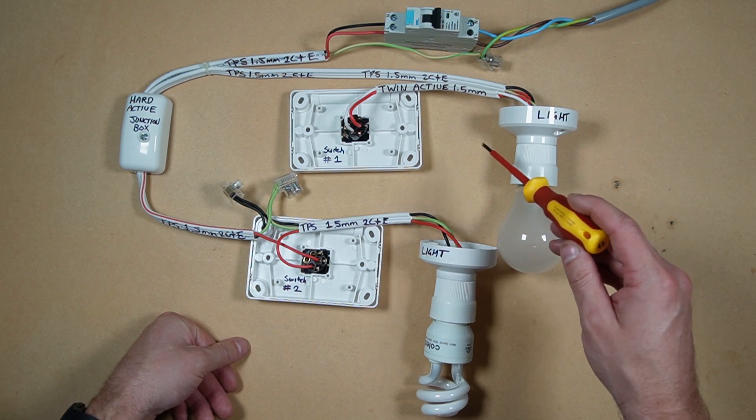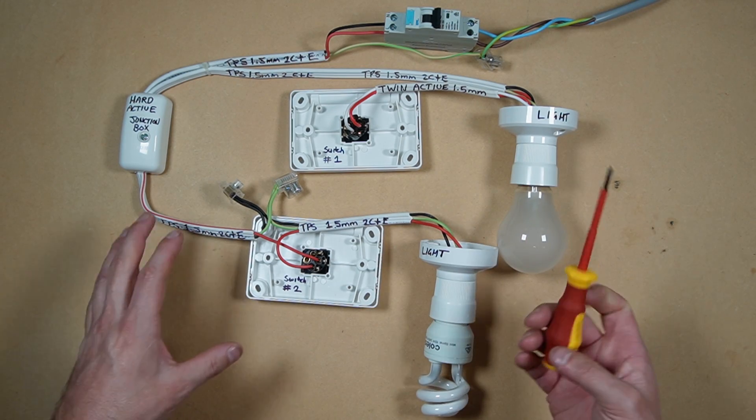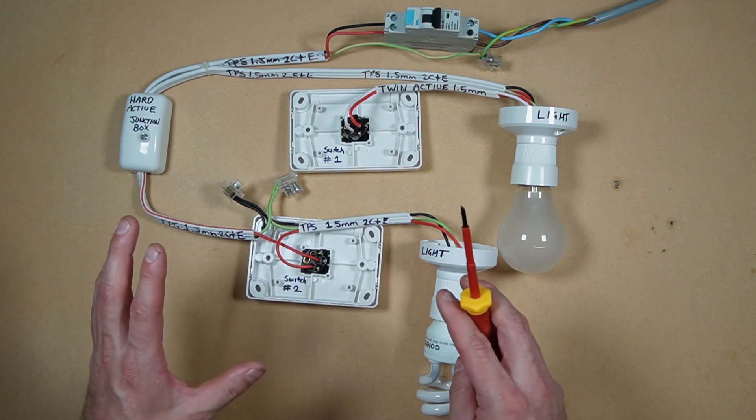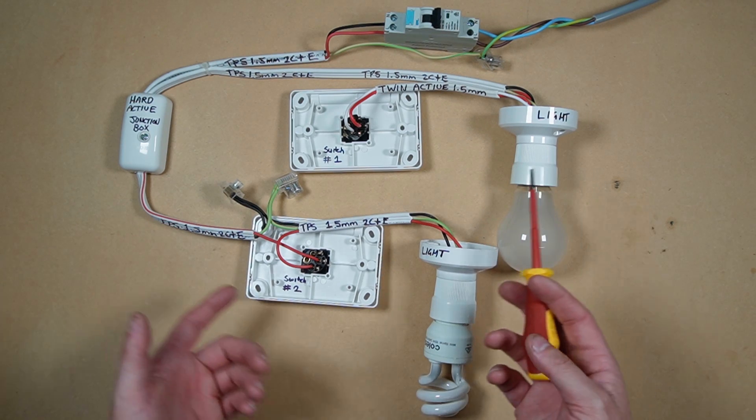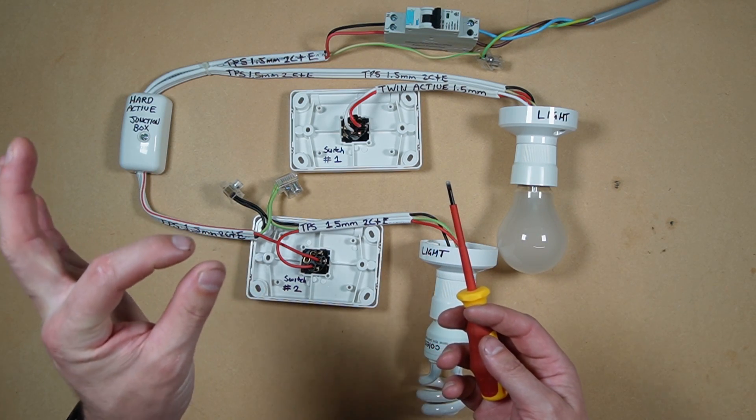In Australia and possibly New Zealand, you'll probably see your lighting cable between 1 mil and 1.5 millimeter. That just means it's the cross-sectional area of the copper conductor that carries the current.